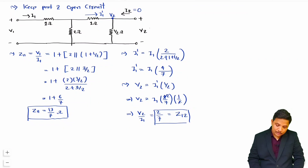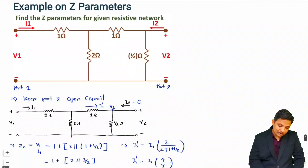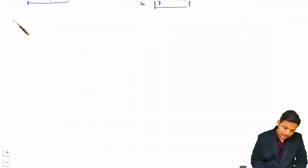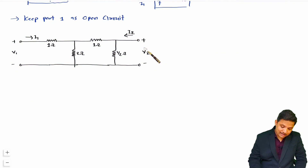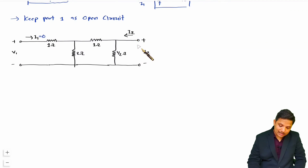Now to find Z22 and Z21, we need to keep port 1 as open circuit. With port 1 open circuited, I1 will be 0. Let us find Z22, which is V2 by I2. That is the impedance measured between the port 2 terminals while keeping port 1 open circuit.